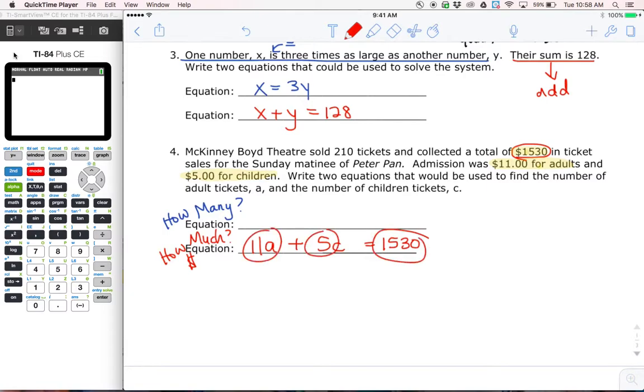We've got money, money, money, right? Dollars, dollars, dollars. Well, the only other number we haven't used yet is this 210. And that's the total tickets. So I guess I can write equals 210. But what equals 210?